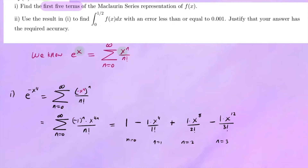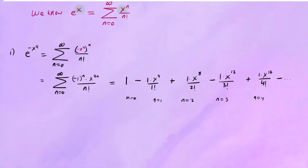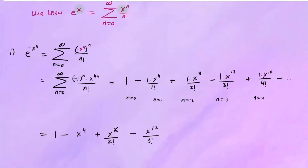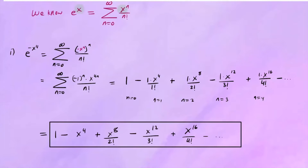That's four terms, and one more. The next term, n equals 4, will be positive because n is even: x to the 16th over 4 factorial. So the first five terms written nicely are: 1 minus x to the 4th, plus x to the 8th over 2 factorial, minus x to the 12th over 3 factorial, plus x to the 16th over 4 factorial, minus and so on. These are the first five terms of this Maclaurin series.